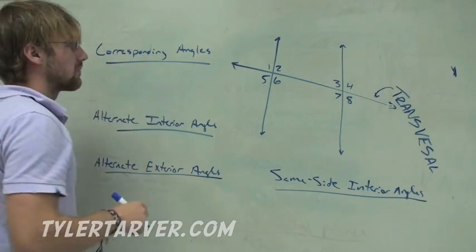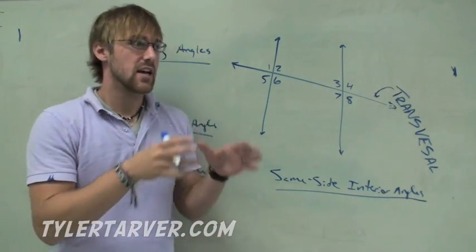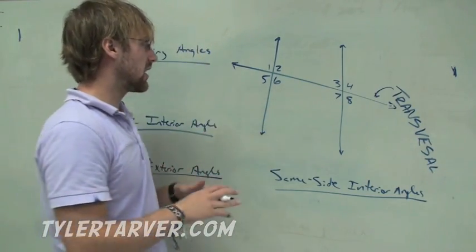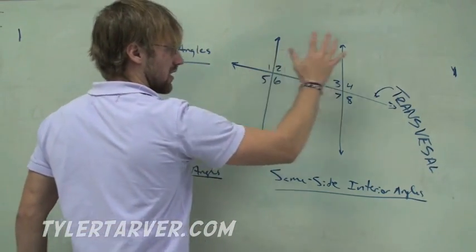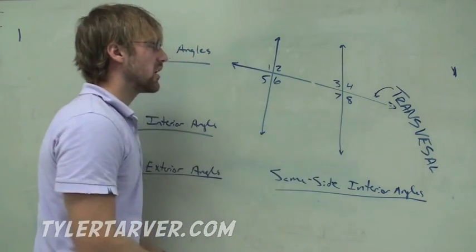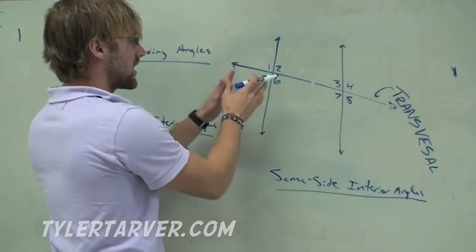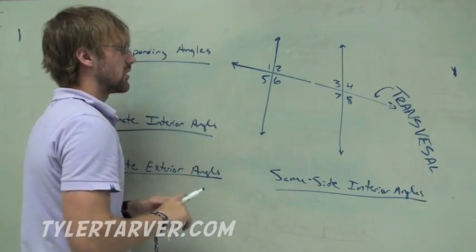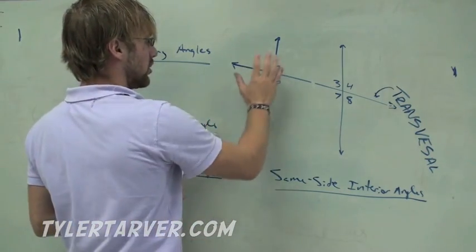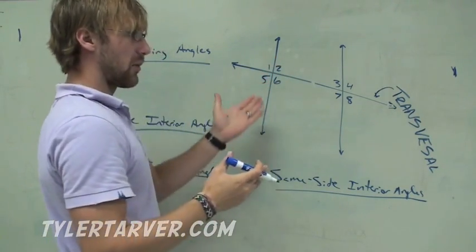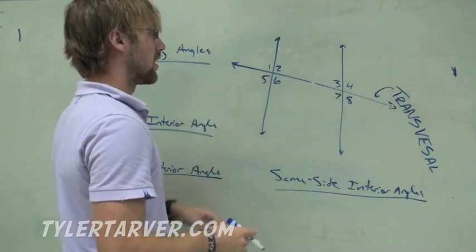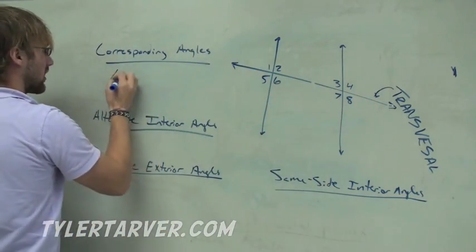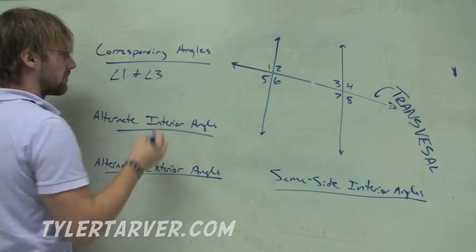Now, corresponding. What corresponding means is it matches up with something else. In real life, corresponding means it matches up. Same thing here. This is one section. This is another section. Pretty much, we're trying to figure out what numbers match up with the other ones from section to section. There's two ways to do it. One, you can look over here at this little group of numbers. Upper left corner is 1. What's the upper left corner down here? 3. They're corresponding. Angle 1 and angle 3.